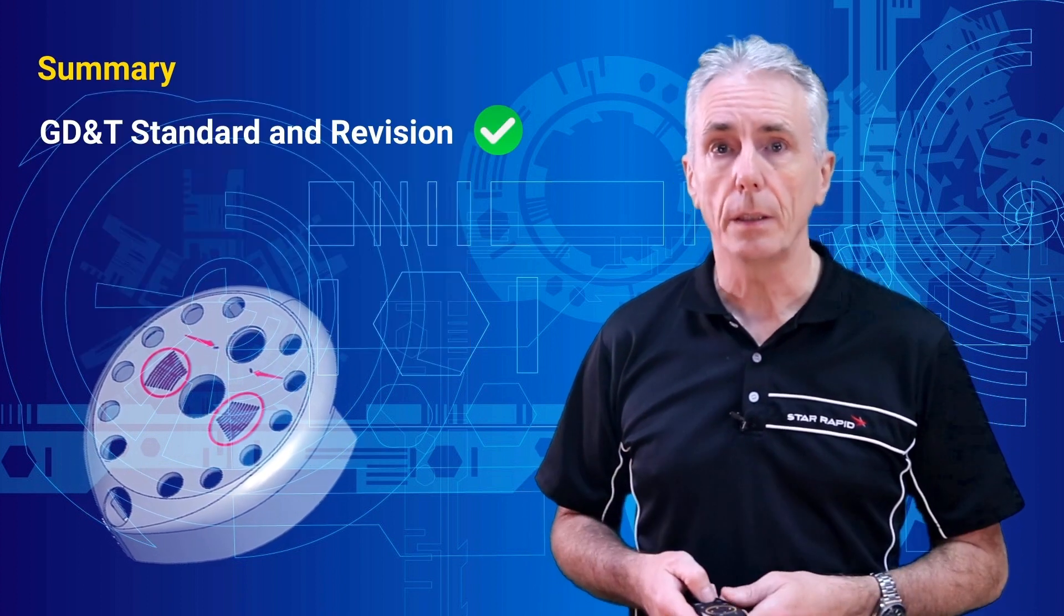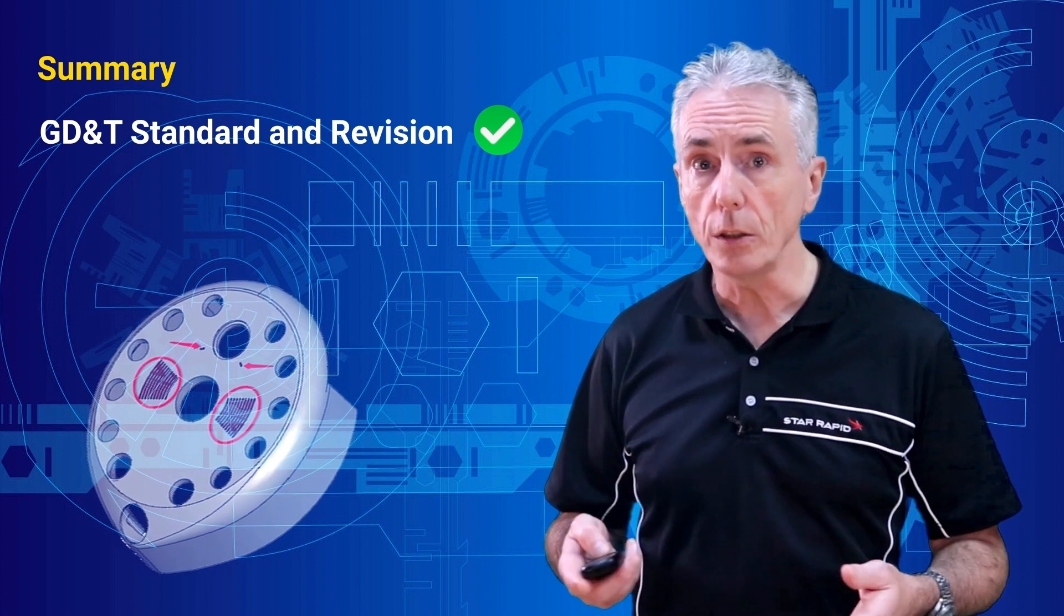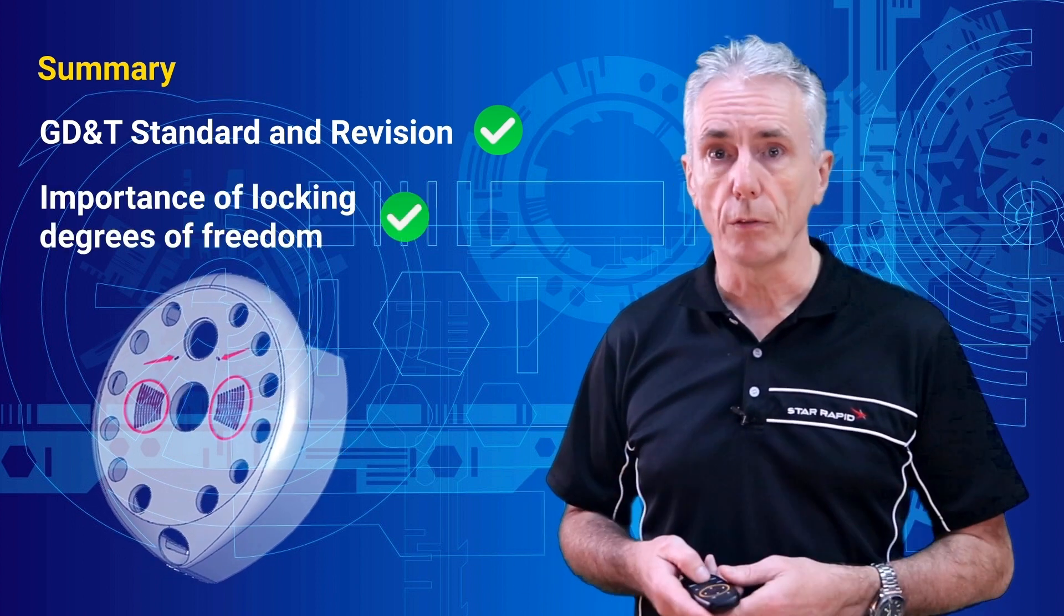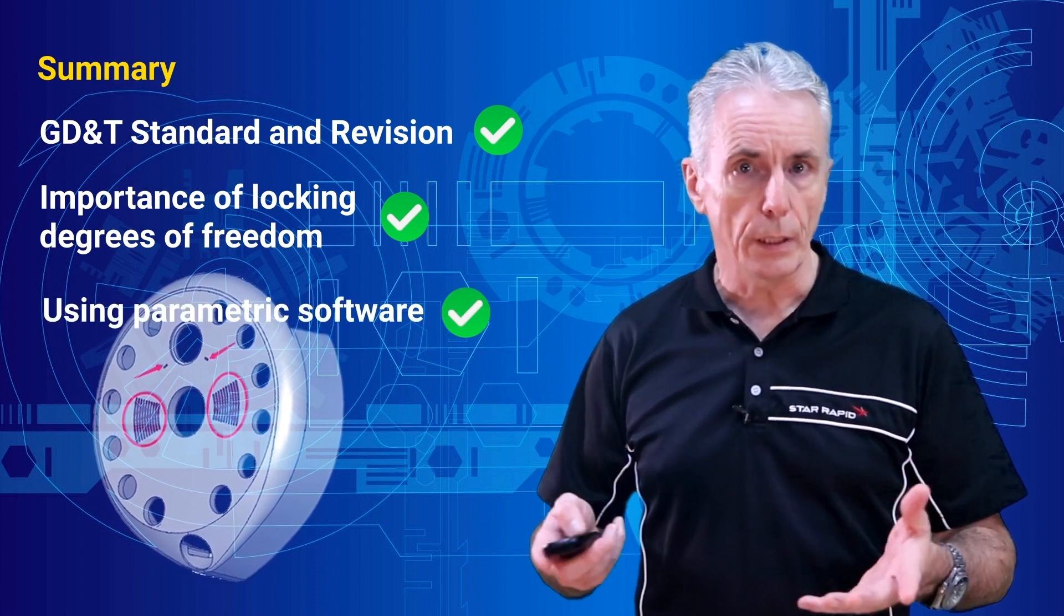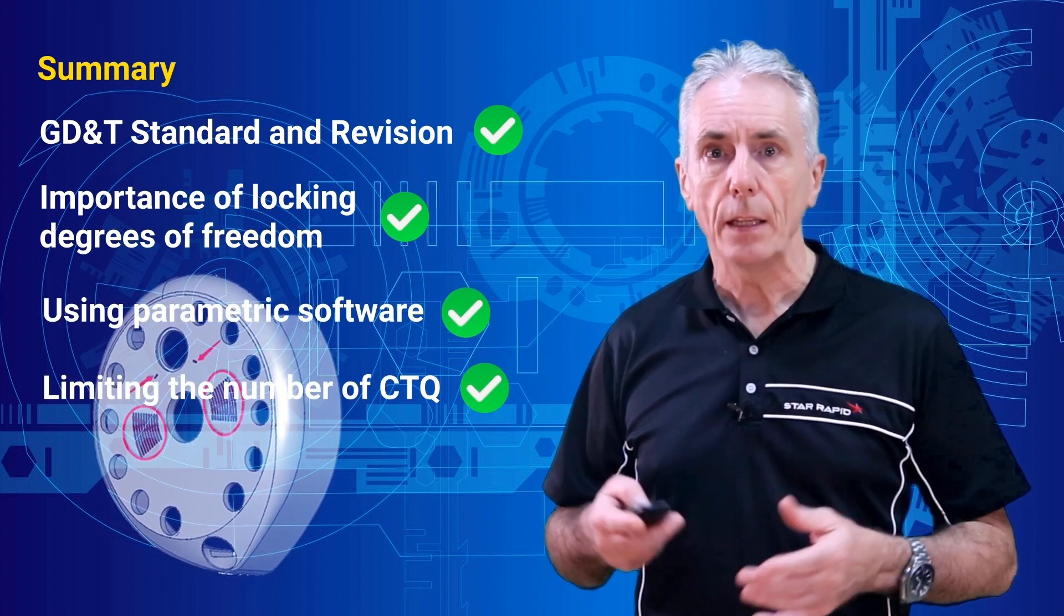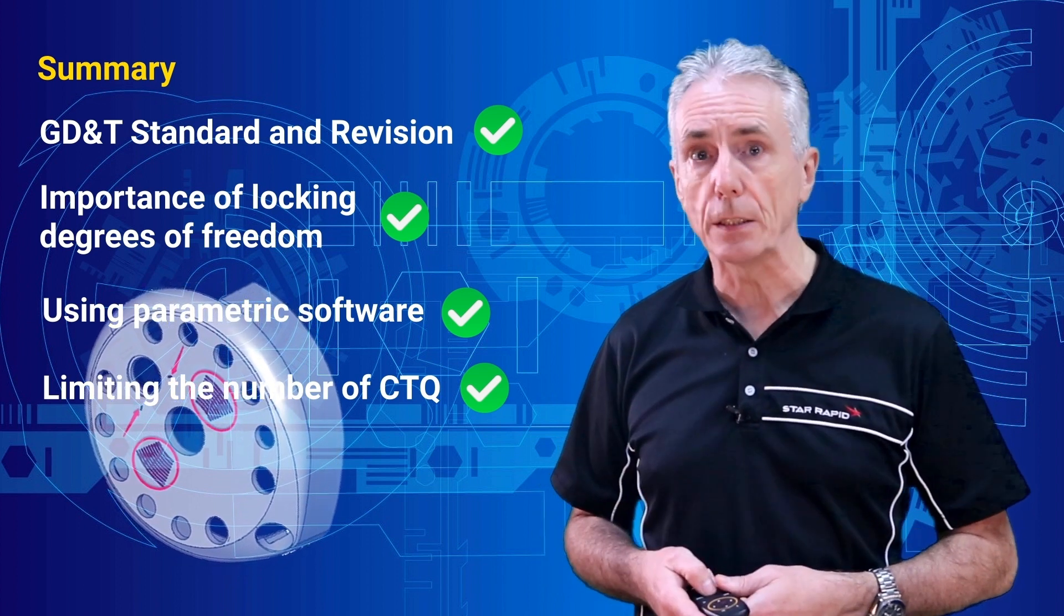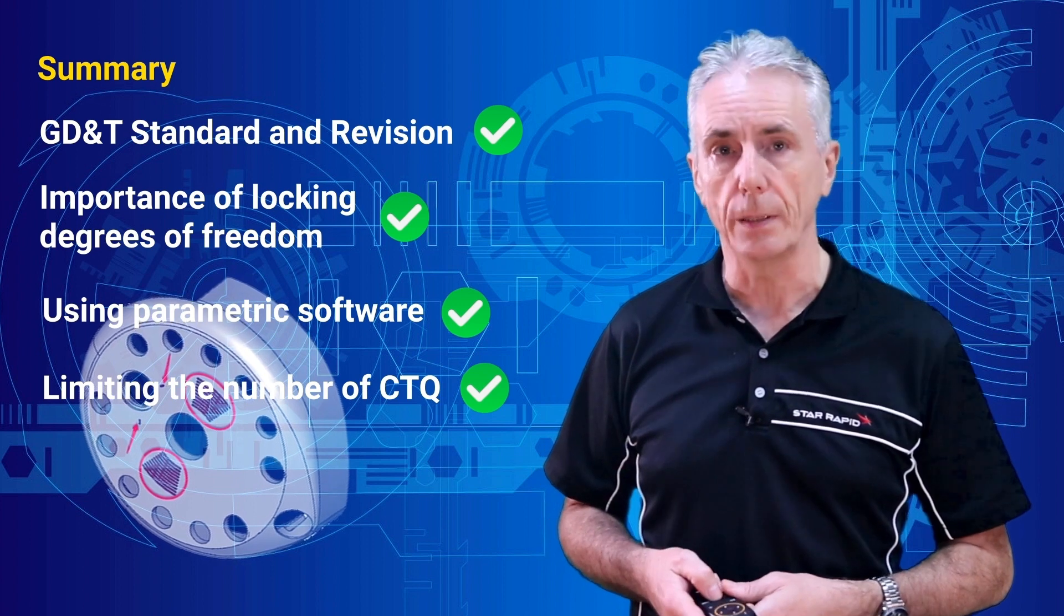So, to recap, today you've learned about the importance of specifying what GD&T standard and revision you're using, the importance of locking degrees of freedom, using parametric software, and limiting the number of critical dimensions. Use these steps, and you'll be well on your way to speeding up your product development process.